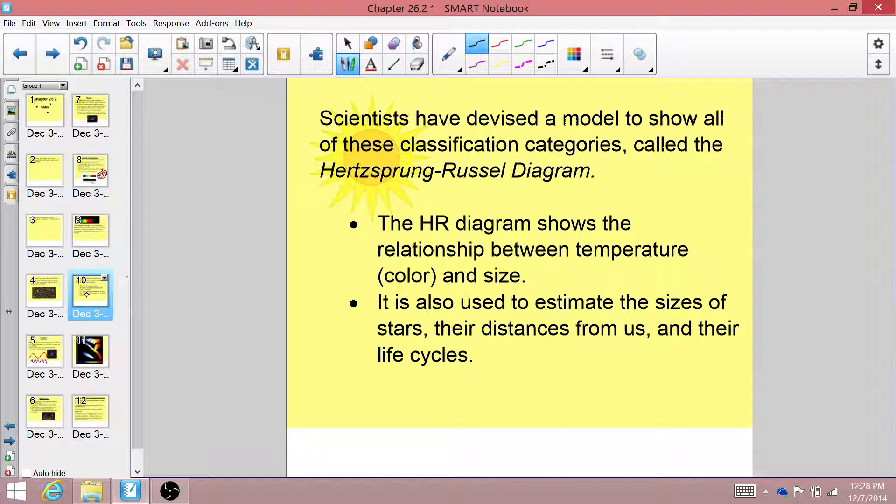And the HR diagram shows us the relationship between temperature and size. But it's also used to estimate the sizes of the stars, their distances from us, their brightnesses, and even their life cycles. Because just like animals, stars actually have life cycles.